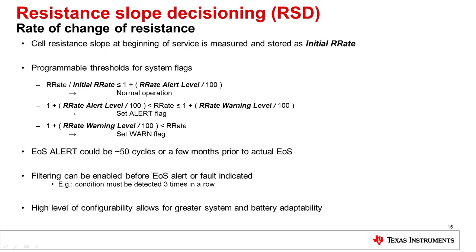Similar to DRD, RSD captures at the very beginning, when the cell is first put into operation, an initial R rate value — how is the cell resistance changing versus time — and stores that in flash memory for comparison. During operation, it captures new values of the R rate and compares each new value as a ratio to the initial R rate, comparing that to various thresholds. If it's below the alert level threshold, no significant aging is assumed. After passing the first threshold, an alert flag is set indicating moderate aging. After passing the second threshold, the warning flag is set indicating the cell most likely needs replacement. Just like DRD, there is also filtering so you can require multiple readings above the threshold before alerts are actually triggered.